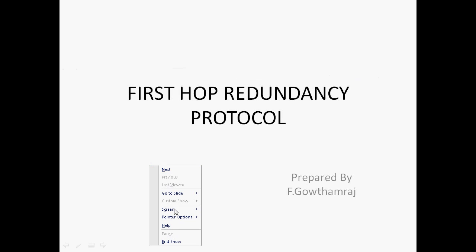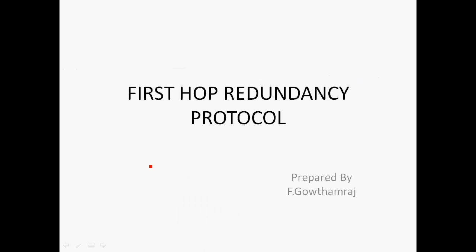Hi friends, this is Gautam. In this video tutorial, I will teach the topic First Hop Redundancy Protocol. What is the usage of this protocol? For example, in an office network, 100 PCs are connected. If the default gateway goes down, the entire network will be affected. To overcome this problem, we can use First Hop Redundancy Protocol.